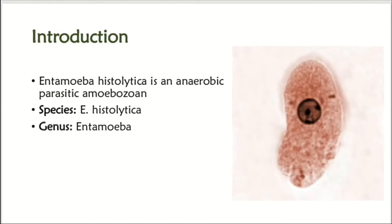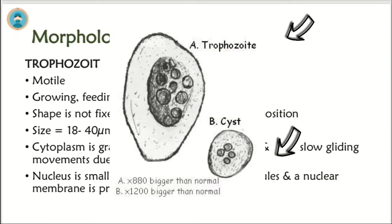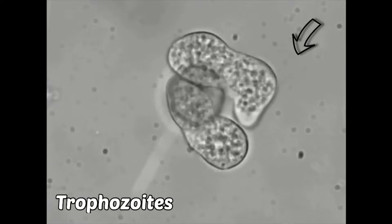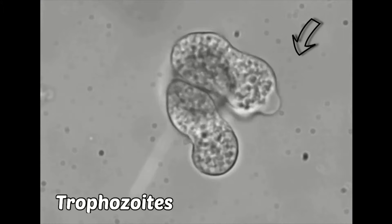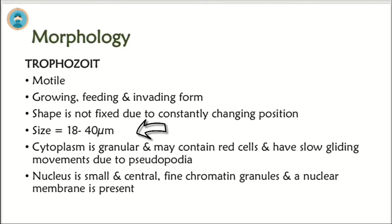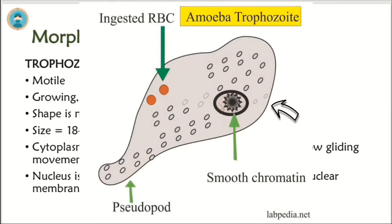Amoeba has two main forms: trophozoite and cyst. The trophozoite form is motile, growing, feeding and invading. Its shape is not fixed due to constantly changing position. Its size varies from 18 to 40 micrometers. Its cytoplasm is granular and may contain some red cells. Trophozoites have slow gliding movements due to pseudopods. Its nucleus is small and central, having fine chromatin granules, and a nuclear membrane is present around the nucleus.